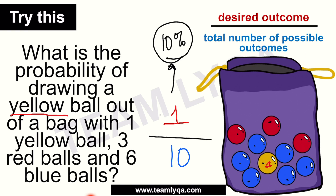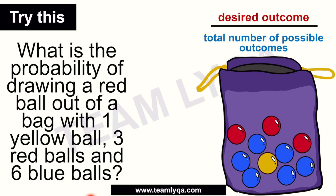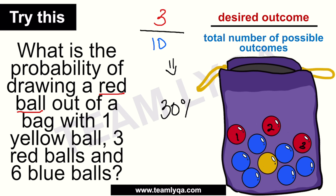Now, what becomes tricky is when it's not a yellow ball — what do we do? If the question is the probability of drawing a red ball out of a bag with one yellow ball, three red balls, and six blue balls, we do the exact same thing. What is the probability of drawing a red ball? We have three red balls — so our desired outcome is three, over the total of ten. So the answer is three over ten, or thirty percent.